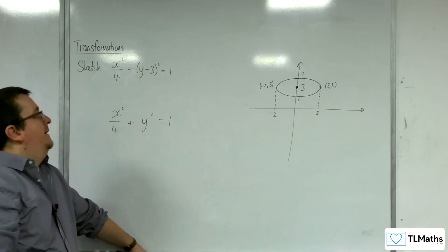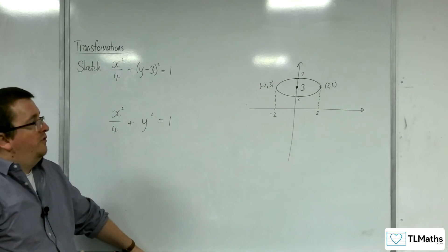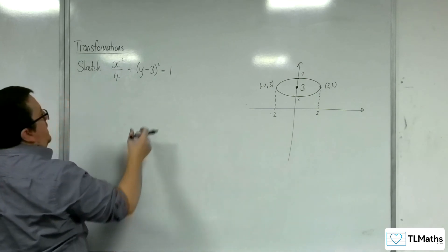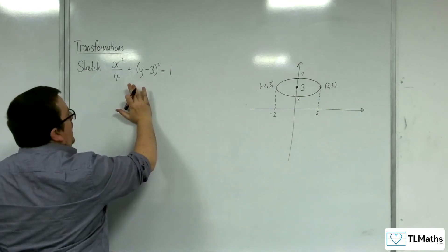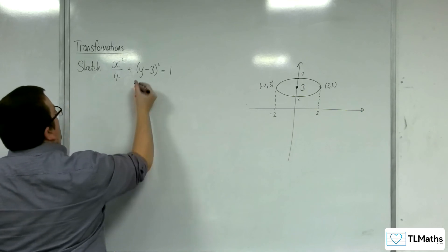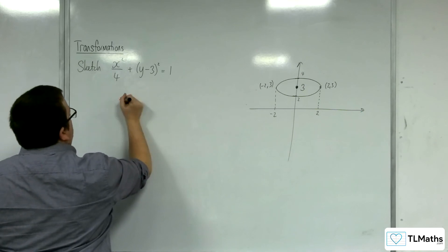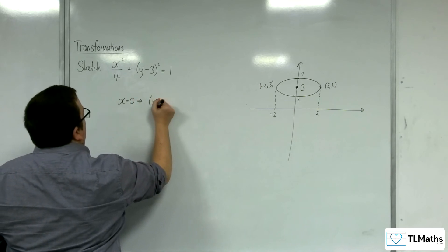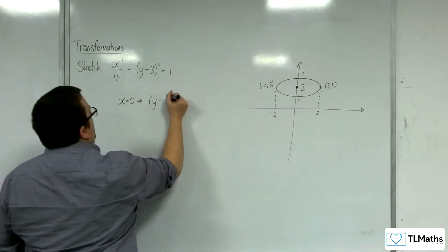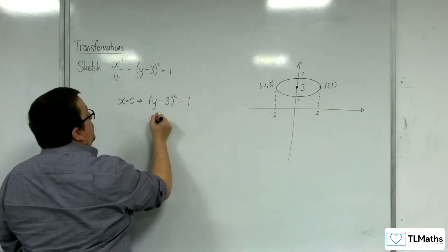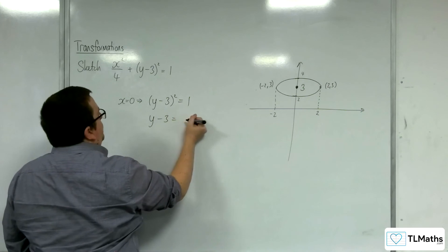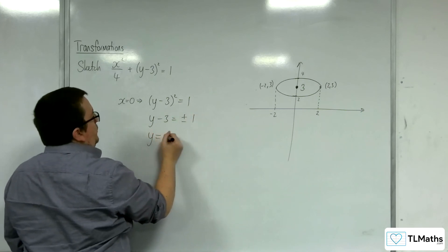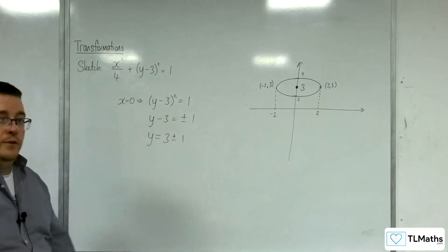Now, if you didn't like that particularly, the alternative would have been to have substituted in x is 0 into this. So that would have meant that when x is 0, I would have got y minus 3 squared equals 1. So square root both sides, we get y take away 3 is plus or minus 1. And then add 3. So y is equal to 3 plus or minus 1, which gets us the 2 and the 4.